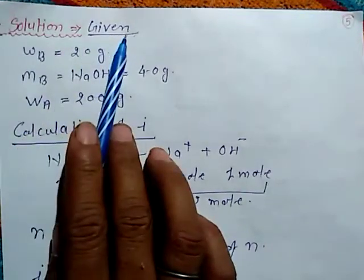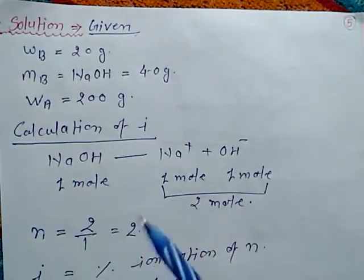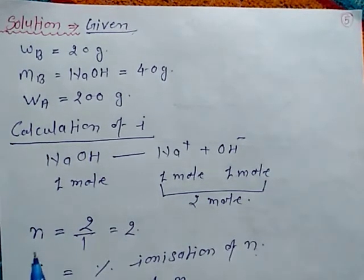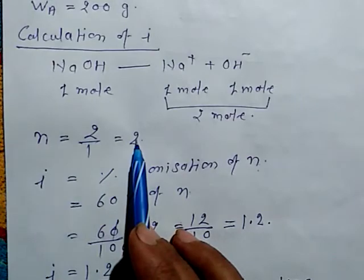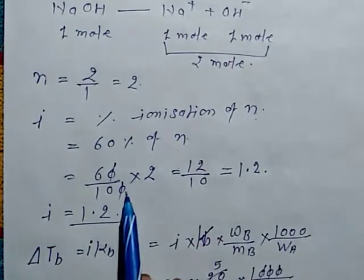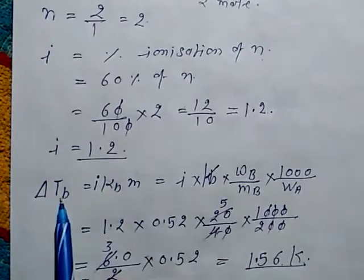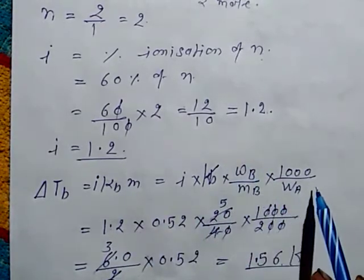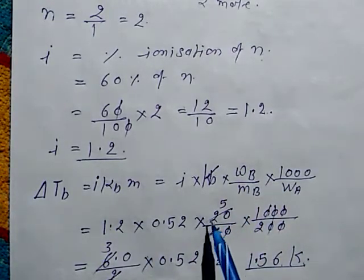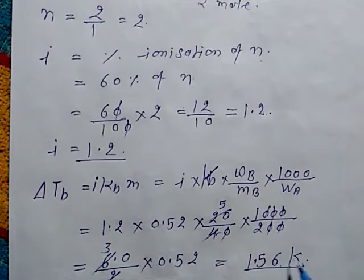Given: W_B = 20 g, M_B = 40 g, W_A = 200 g. For NaOH → Na⁺ + OH⁻, n = 2. The Van't Hoff factor i = percentage of ionization × n = (60/100) × 2 = 1.2. Using the formula ΔT_b = i × K_b × m and substituting all values, we get ΔT_b = 1.56 K. So the elevation of boiling point is 1.56 K.